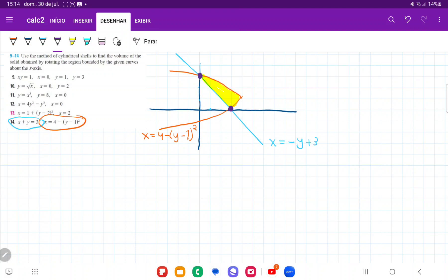And even though it looks apparent from the graph, it's always important to check it analytically, because sometimes it looks like something, but it's not. So let's check analytically by setting these curves equal to each other.